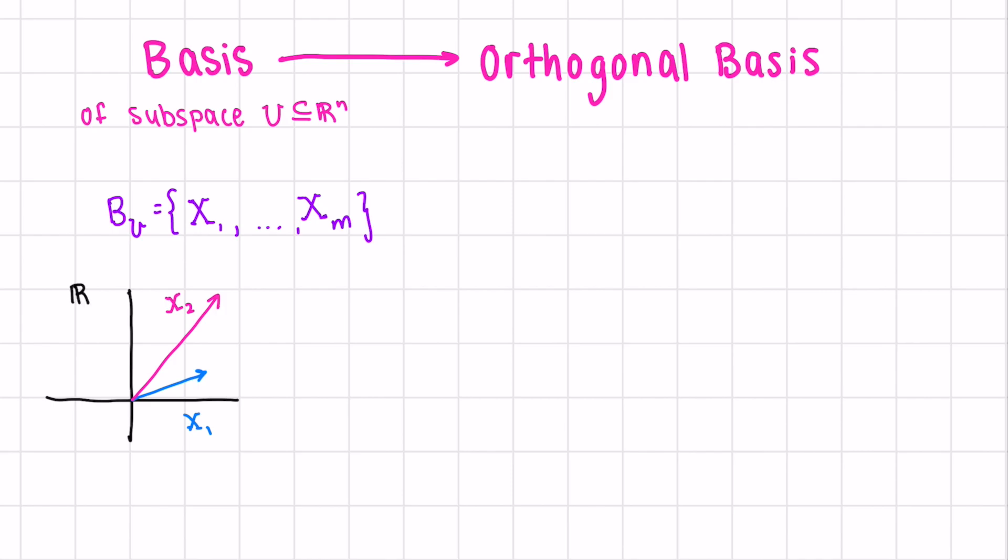Let's look at R^2 to understand the rationale. We can see that x_1 and x_2 span R^2, but they're not orthogonal. In order to create two orthogonal vectors, we pick one of them. Let's say x_1. We normalize it.